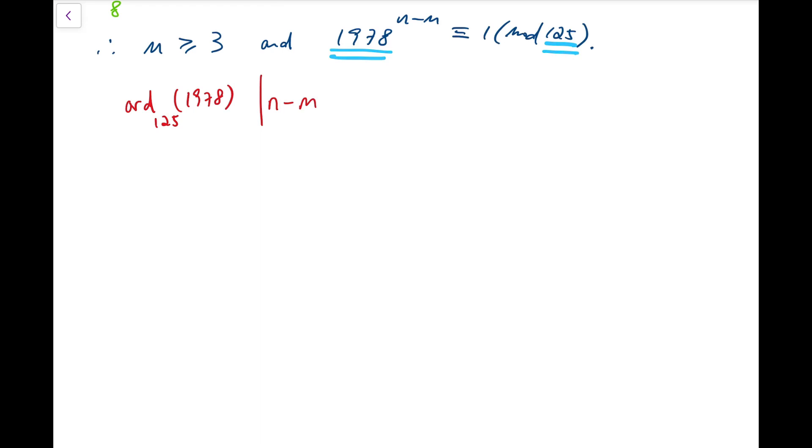Now for the order, we need to recall Euler's theorem, because we know that this order must divide φ(125). And recalling that 125 is actually 5³, so φ(125) equals the original number multiplied by (1 - 1/5). And that's 100.